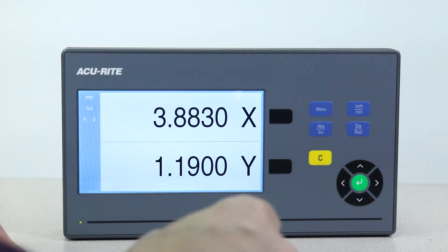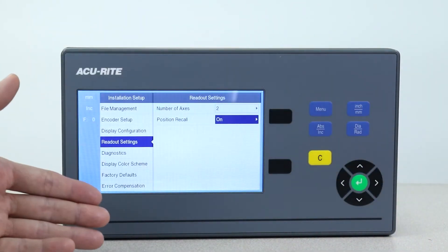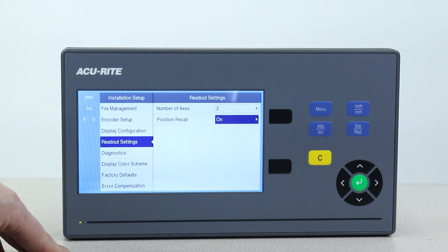The display does feature position recall which you can turn on or off. This is helpful if you need to power down in the middle of a project for whatever reason. The display will remember your last position on both axes.